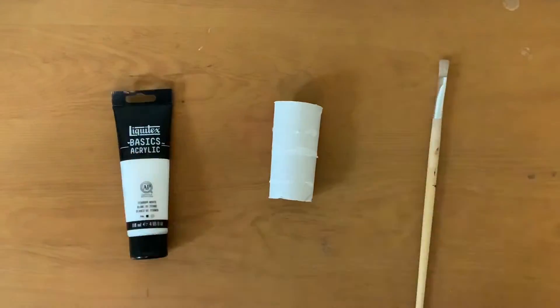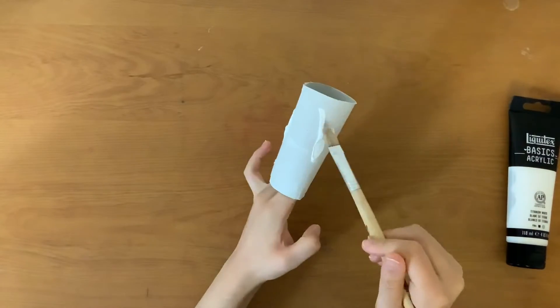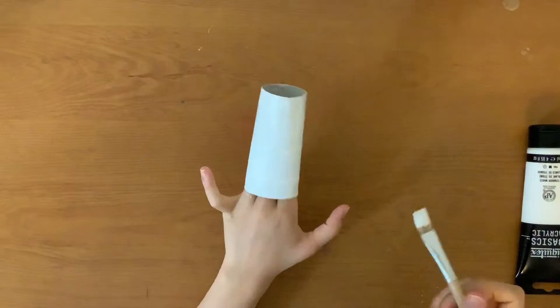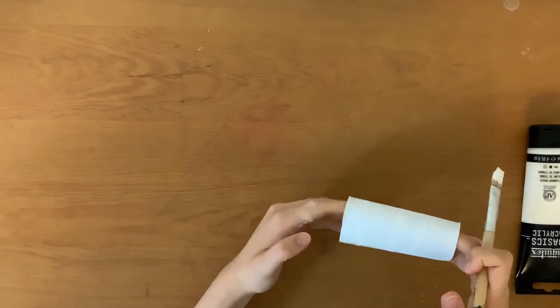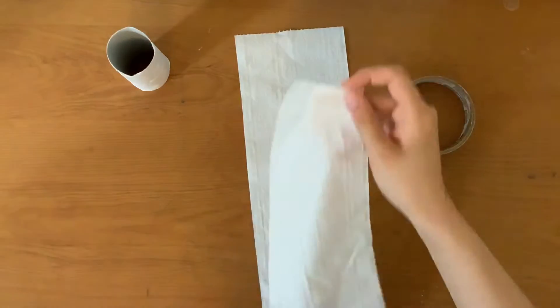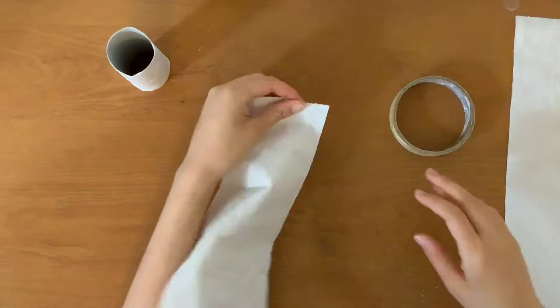Once you've done that go ahead and paint your toilet paper roll white. Then once you're done set it aside and wait for it to dry. While that dries we'll go ahead and work on our toilet paper.